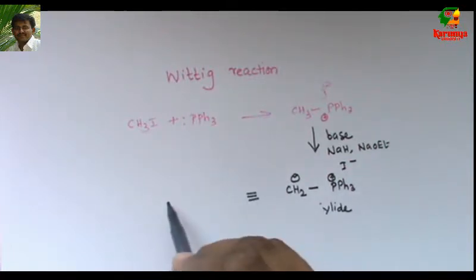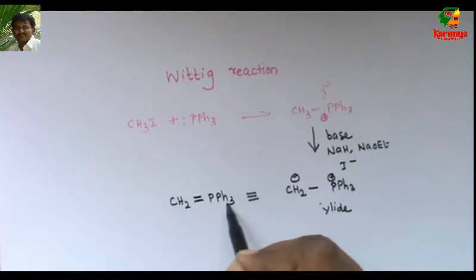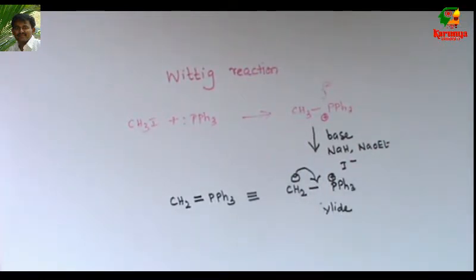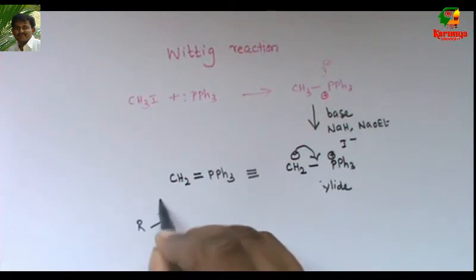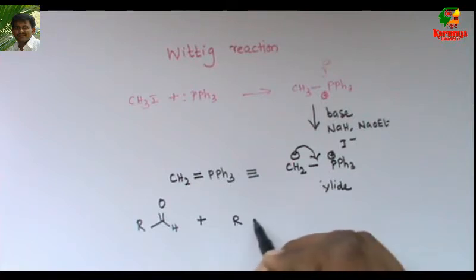We can also write this in this way. Ylide. So this minus charge goes there to give this. So this is called ylide. Initially they prepare this ylide and then they go for the reaction. Now only we are going to add aldehyde. And this one. They react to give this alkene.